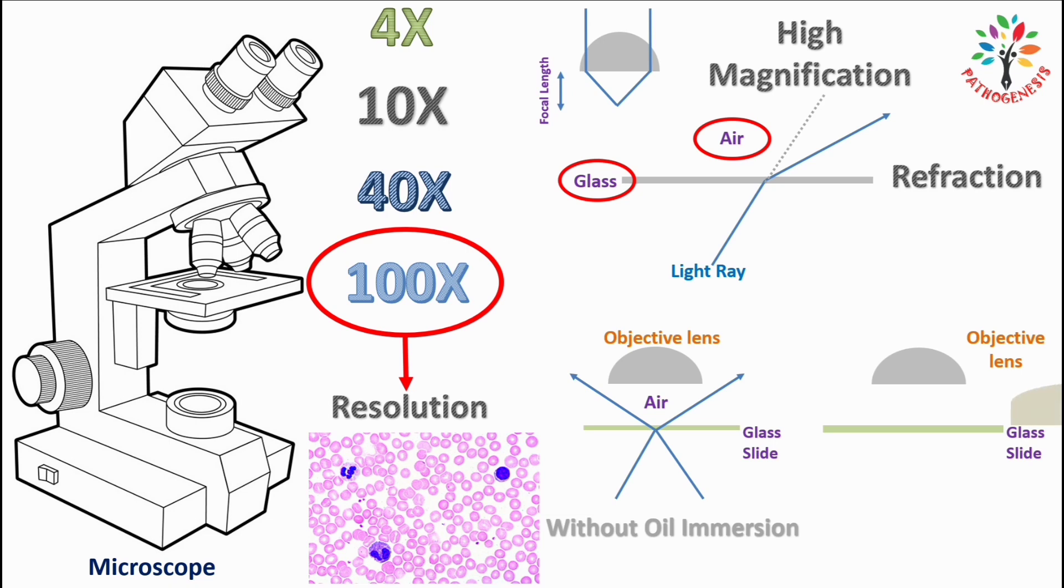So we can use cedar wood oil in between the glass slide and the cover slip to prevent the loss of light because of refraction and the image will be very clear under the microscope. That means we will get a higher resolution power.